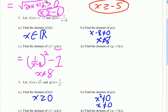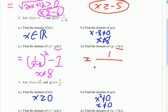Now let's find g of f of x. Start with the domain of f of x. We can see that it's a quadratic function — the highest degree is 2 — so there's no domain restriction. We don't have to worry about that on this problem. So let's compose the two functions: plug f of x into g of x and get 1 over x squared minus 1 minus 8, which simplifies to 1 over x squared minus 9.